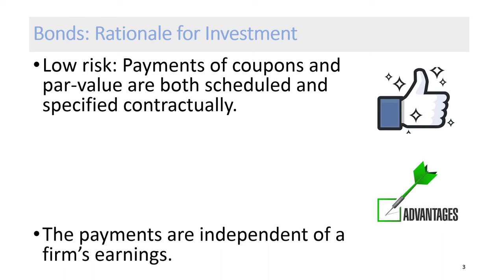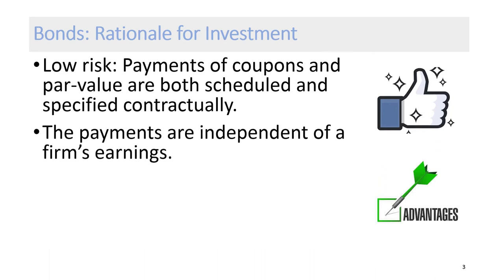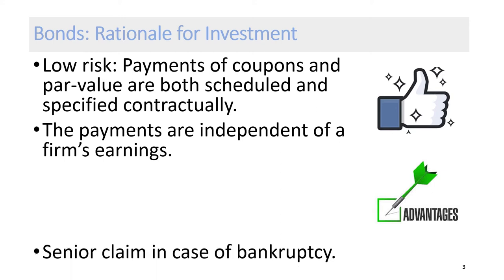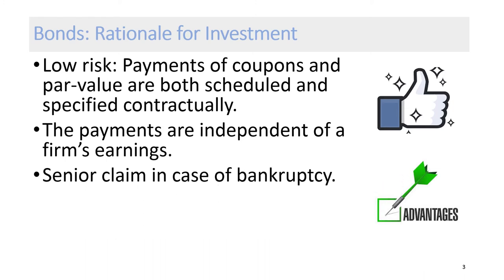The coupon interest payments received by bondholders are independent of a firm's earnings. This is because a bond is an IOU between the lender and borrower that includes the details of the loan and its payments. Owners of bonds are debt holders — they are paid in interest rather than profits. Bondholders have senior claims in the case of bankruptcy and enjoy a measure of legal protection. If a company goes bankrupt, its bondholders will often receive some money back. Bondholders have priority over shareholders in the line to be paid. Common stockholders are the last to be paid from the liquidating company's assets.